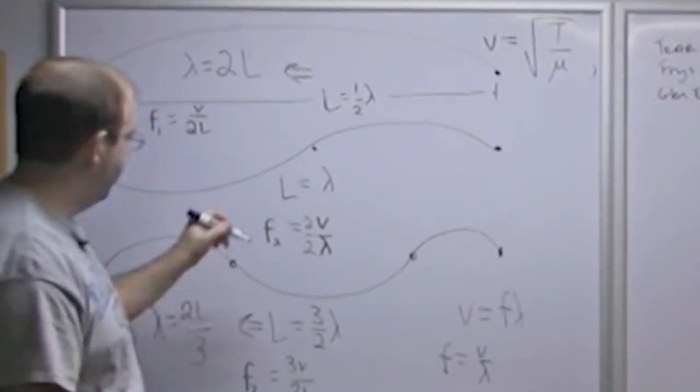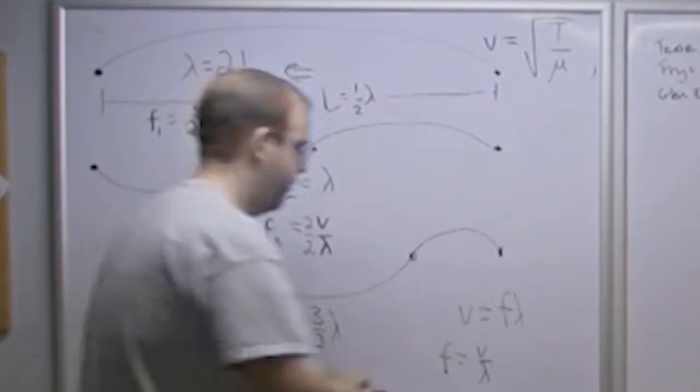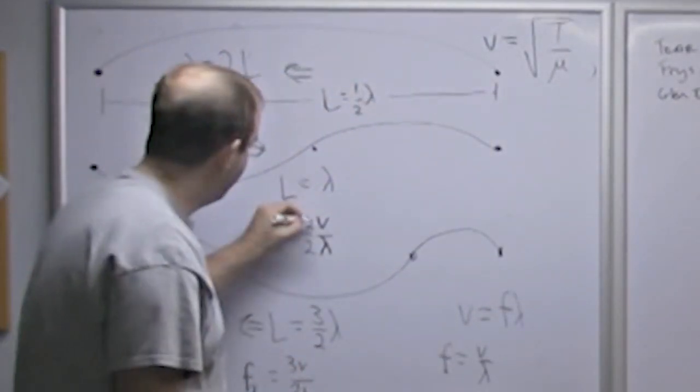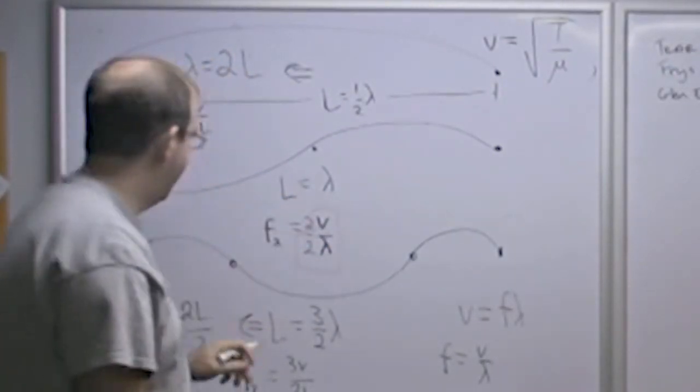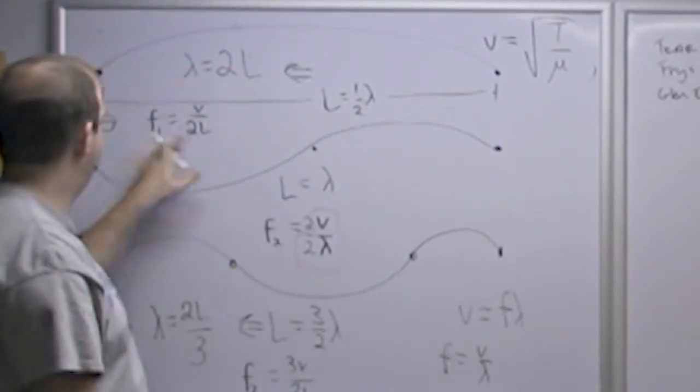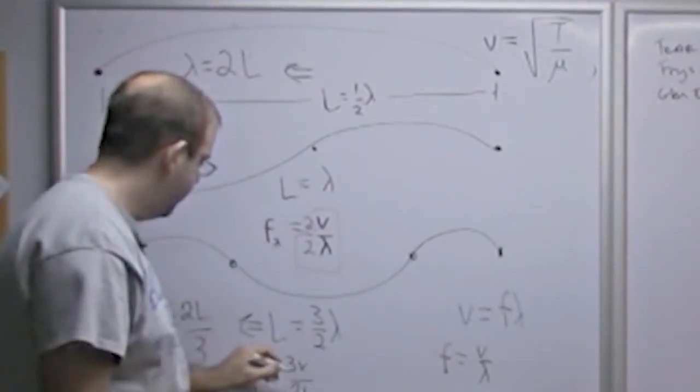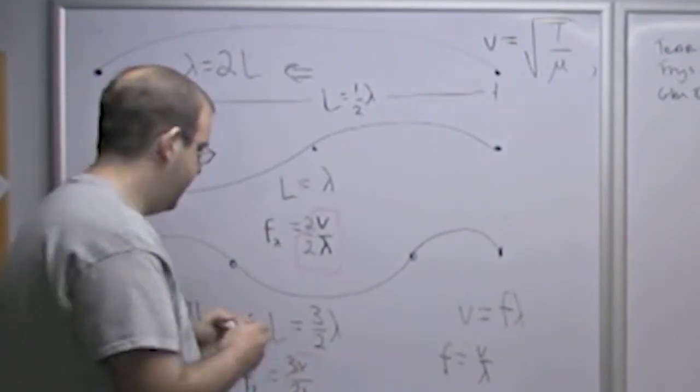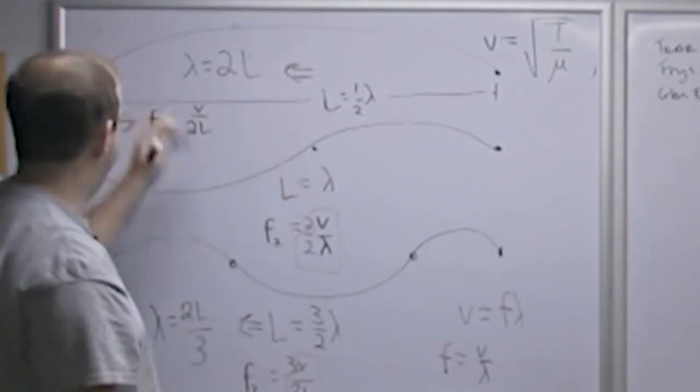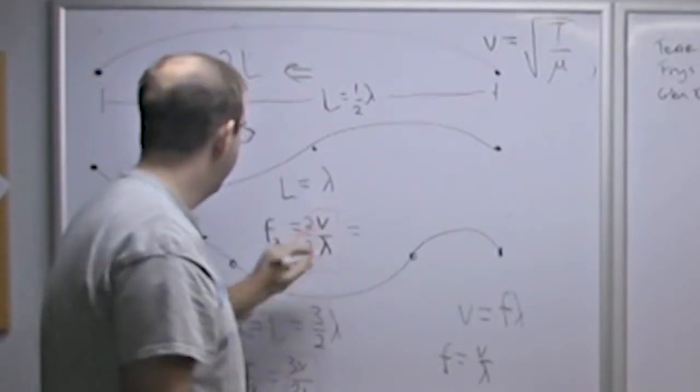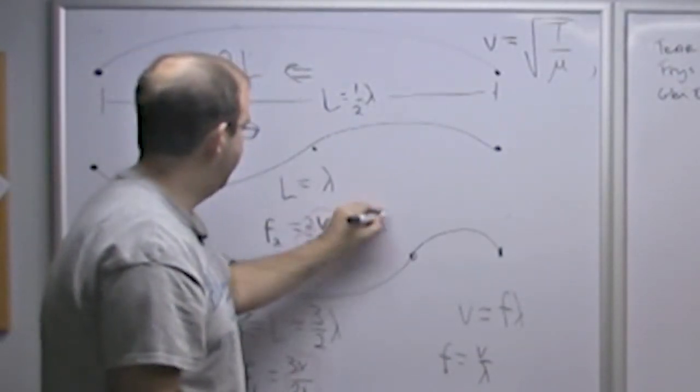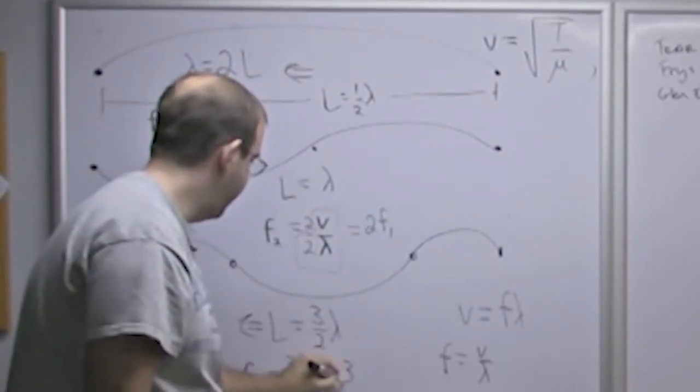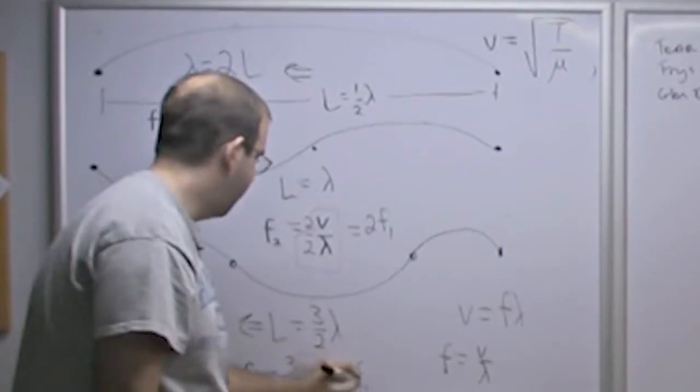But now if you look at, I'm going to use a different color because I can. If you look at this part of the equation here, well, this is equal to the frequency of the first resonance. So I can rewrite these frequencies in terms of the first frequency. So F2 is equal to 2 times F1 and F3 is equal to 3 times F1.